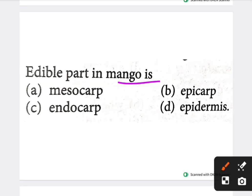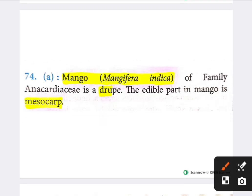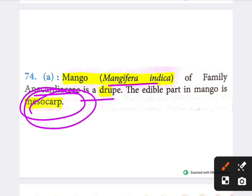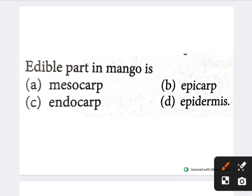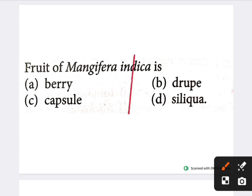The next question: which is the edible part in mango? The answer is the mesocarp. Options include epicarp, endocarp, and epidermis, but the correct answer is mesocarp — option A.